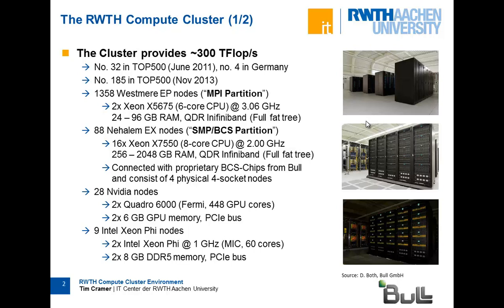This is the real productive cluster, and then we have some smaller parts. For example, the NVIDIA nodes — we have 28 NVIDIA nodes, each with two Quadro 6000 Fermi GPUs with 448 GPU cores and 6 gigabytes of GPU memory each. These are plugged into the PCIe bus of a host system. Similarly, we have the Intel Xeon Phi, also plugged into the PCIe bus — it's called a co-processor rather than an accelerator for marketing reasons, but basically it's the same idea.